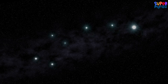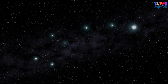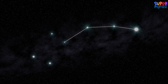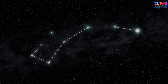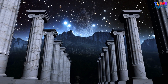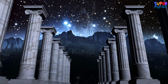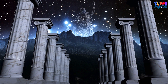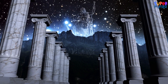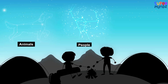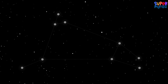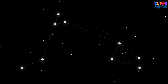A constellation is like a picture made out of stars. People long ago looked at the stars and imagined different things — like animals, people, or objects. They connected the stars with imaginary lines to make these shapes.